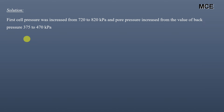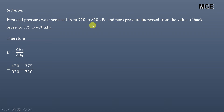Now let us move back to our question. In the first step, the cell pressure was increased from 720 kPa to 820 kPa, and this caused the pore pressure to increase from the back pressure value of 375 kPa to 470 kPa. Therefore, Skempton's pore pressure coefficient B equals the change in pore pressure divided by the change in cell pressure: (470 minus 375) divided by (820 minus 720), which equals 0.95.